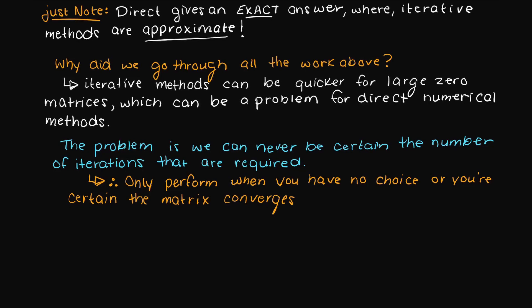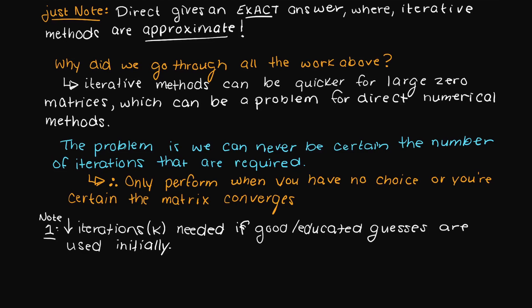Lastly, two things to note. There will be fewer iterations needed if our initial guess of the unknown values of x is closer to our real x values, which should make sense, right? We are closer to the finish line at the beginning, so an educated guess is usually required.